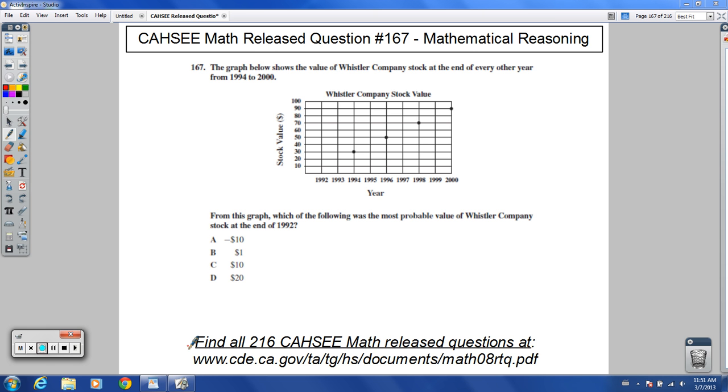Welcome to release question 167 for CAHSEE Math. It says this, the graph below shows the value of Whistler Company stock.